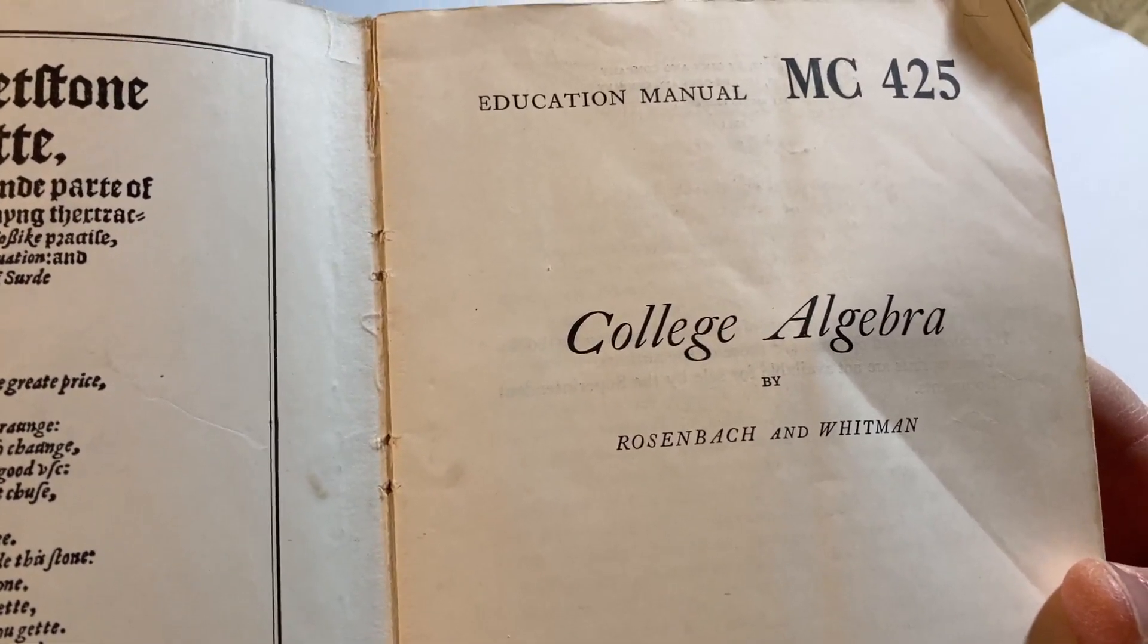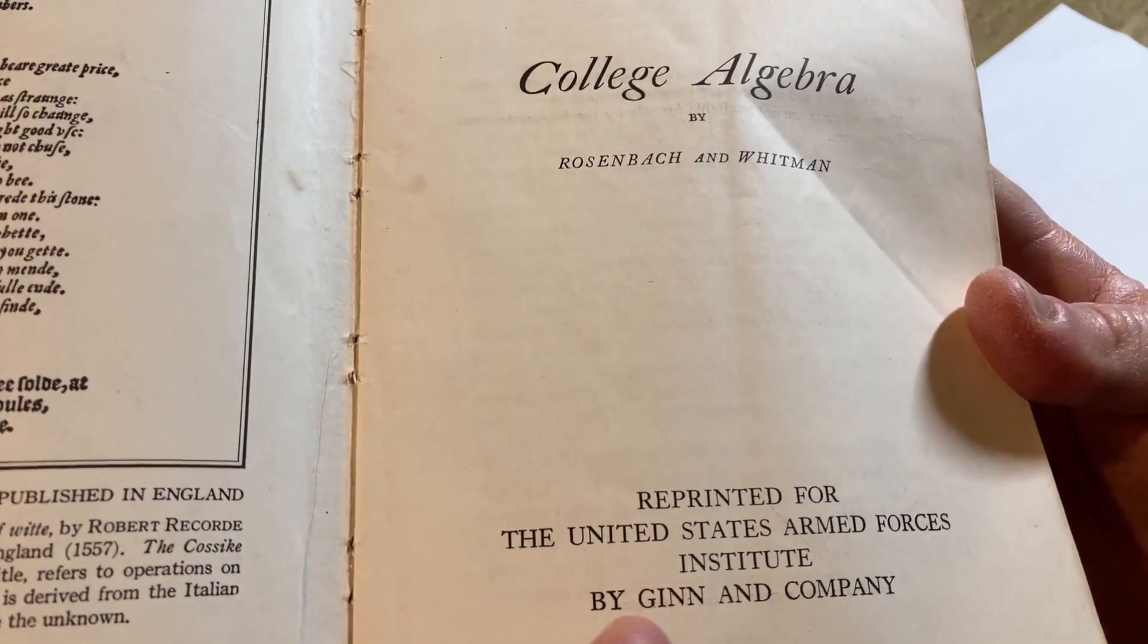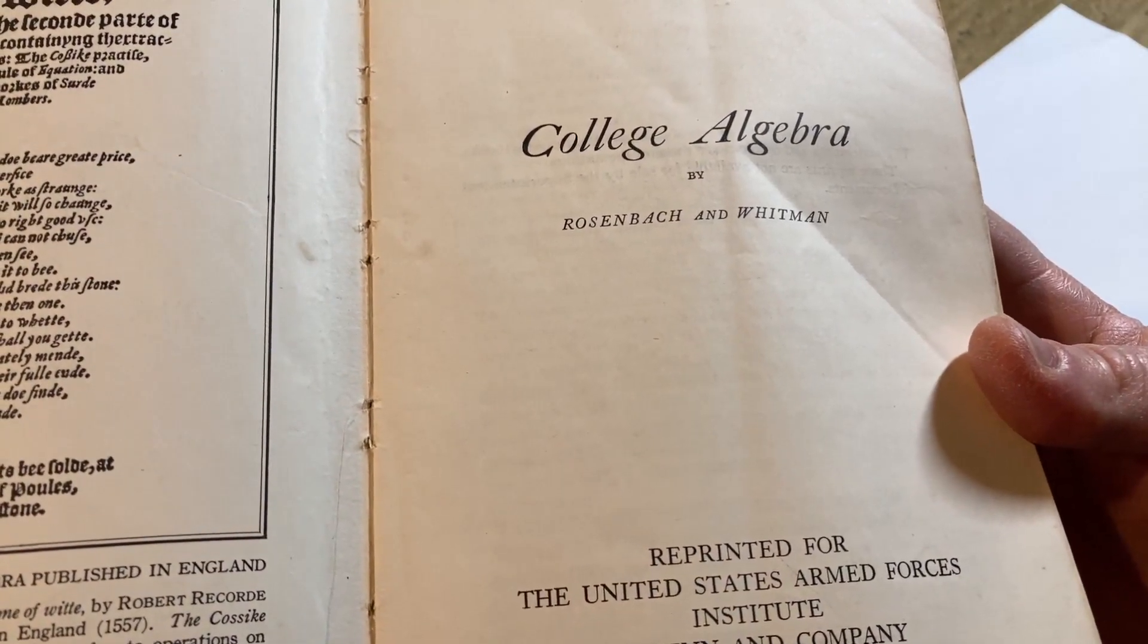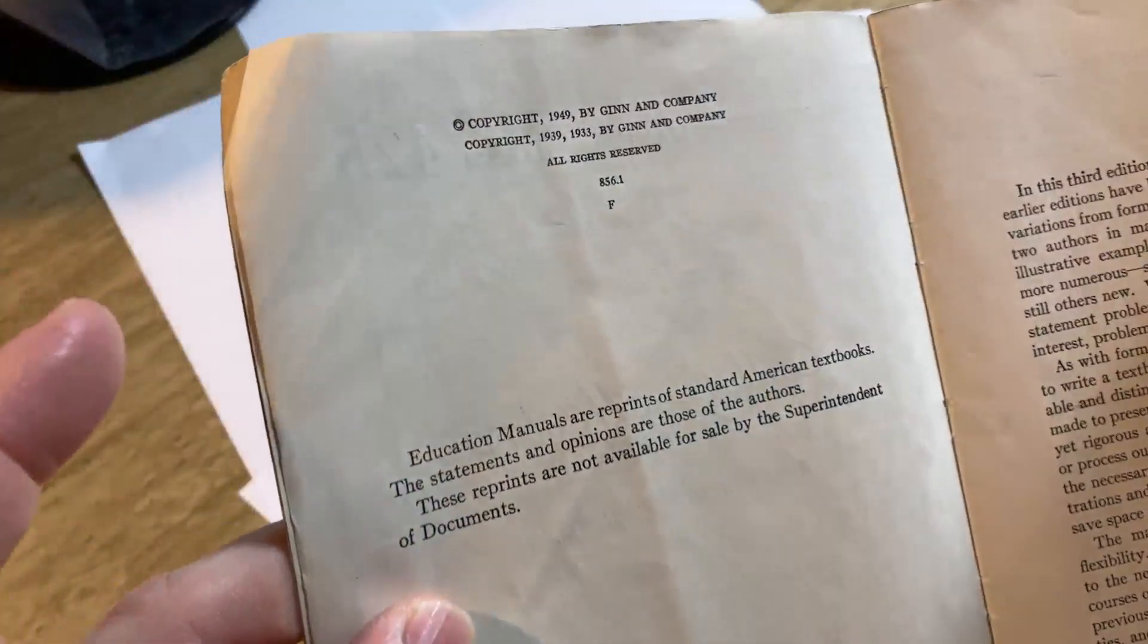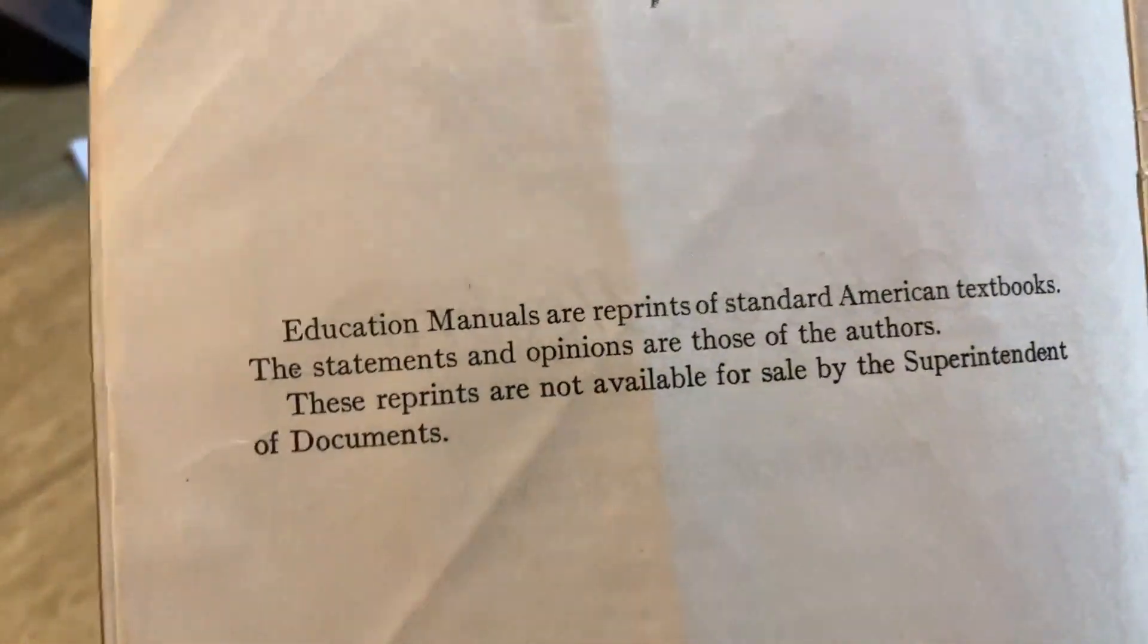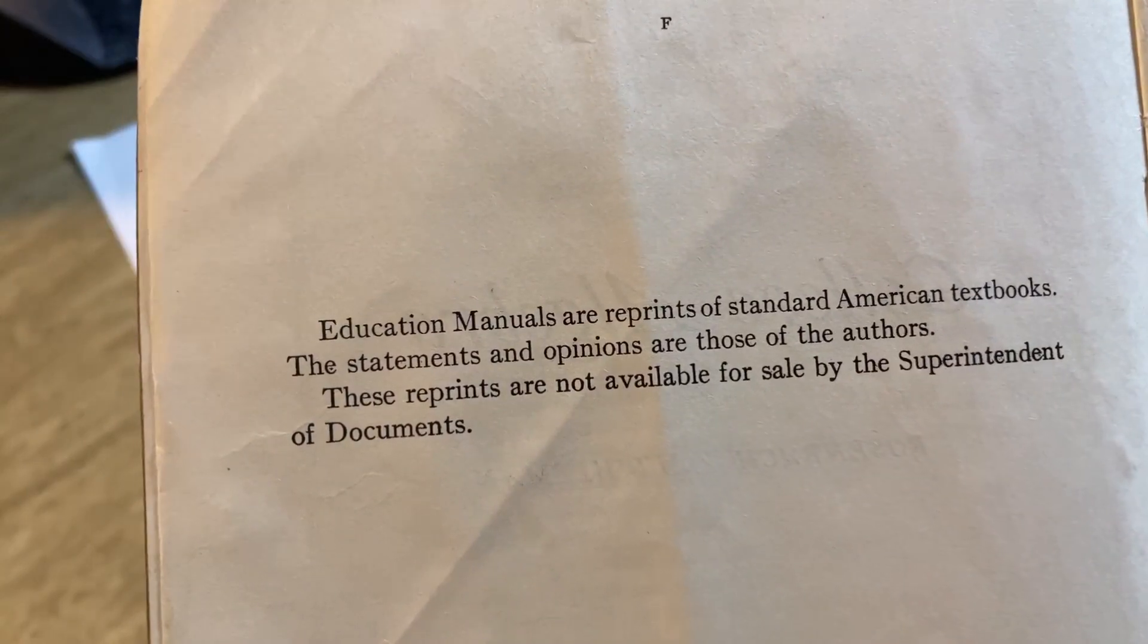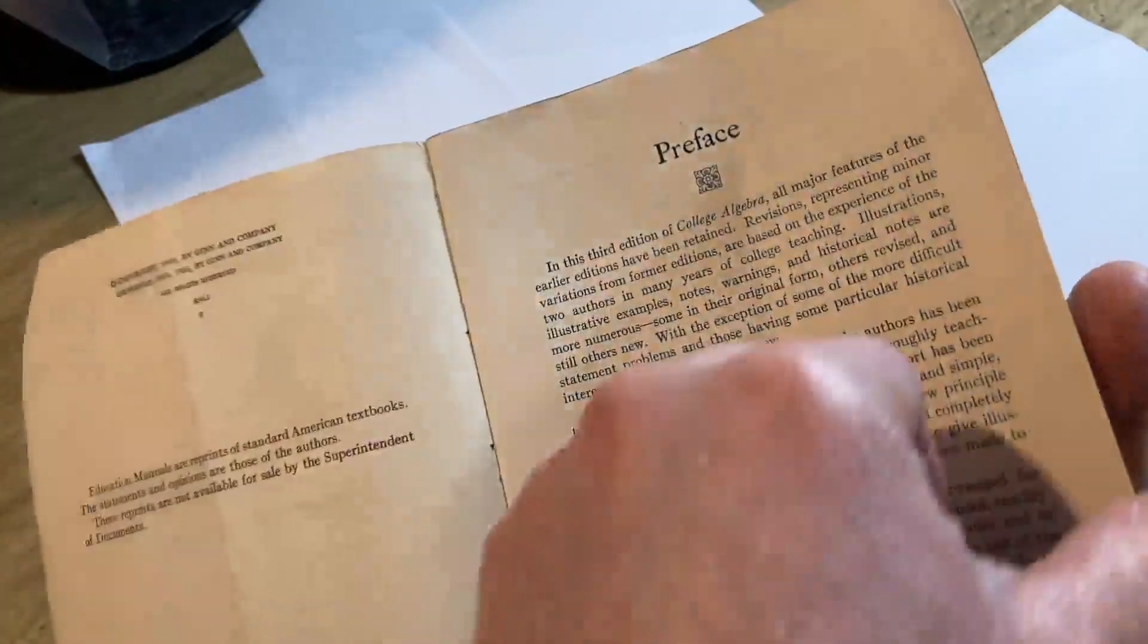College Algebra by Rosenbach and Whitman, reprinted for the United States Armed Forces Institute. I just think it's awesome that the United States Army or some association of it was reprinting great math books for people. I think that's such a good thing for the world and for the country. Copyright 1949 by Ginn and Company. So this one must be from 1949. Education manuals are reprints of standard American textbooks. The statements and opinions are those of the authors. These reprints are not available for sale by the superintendent of documents. Let's just go straight to the contents and look at some of the actual math.